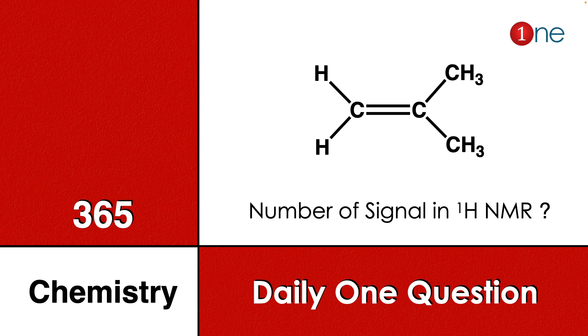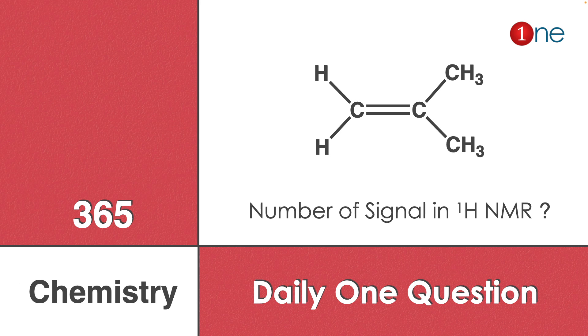Welcome to One Chemistry. This is the 365 Chemistry series, daily one question for you. Here, 2-methylpropene is given. You have to find how many number of signals it will give in the proton NMR.